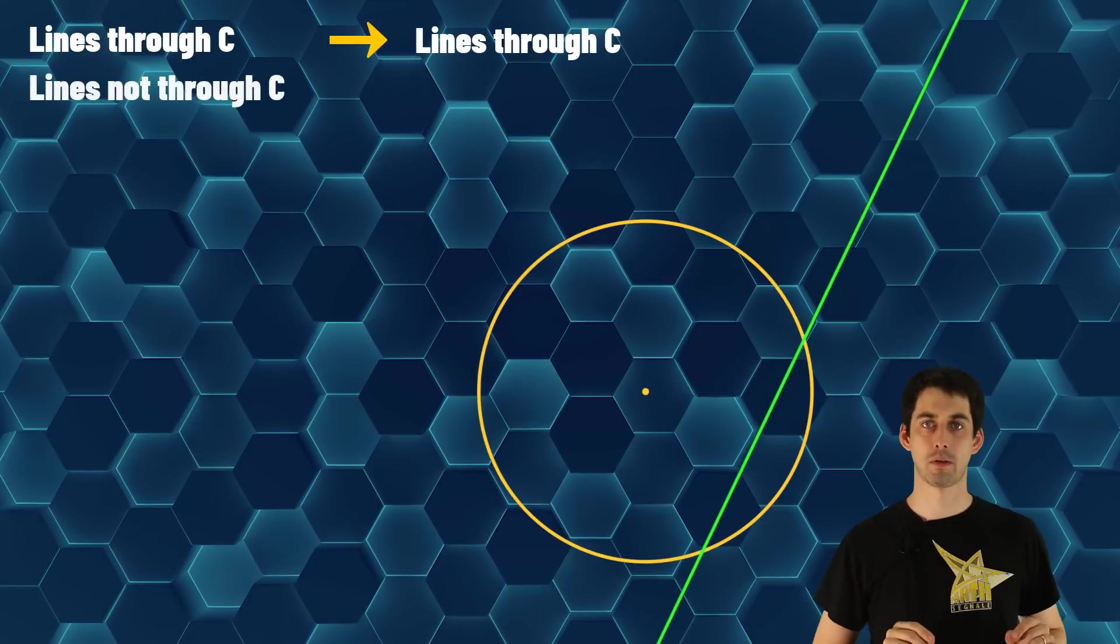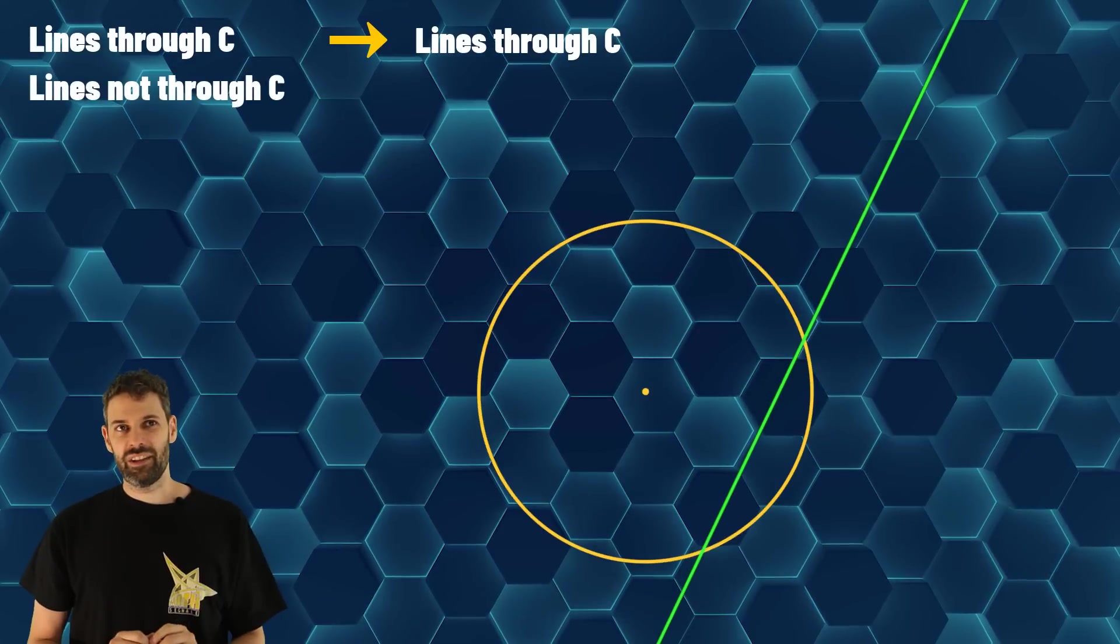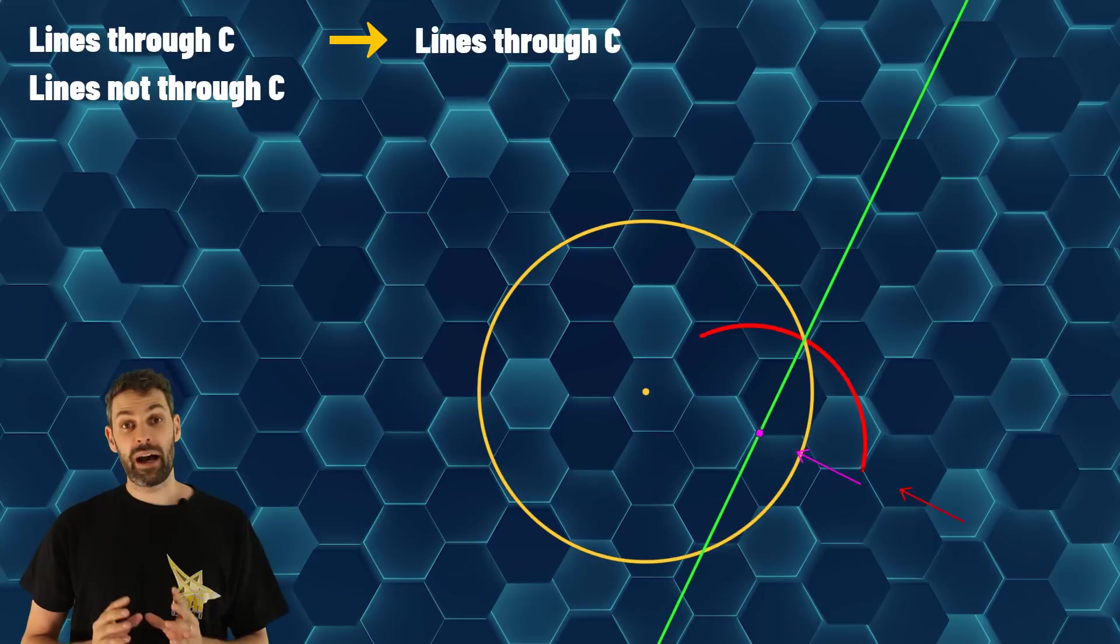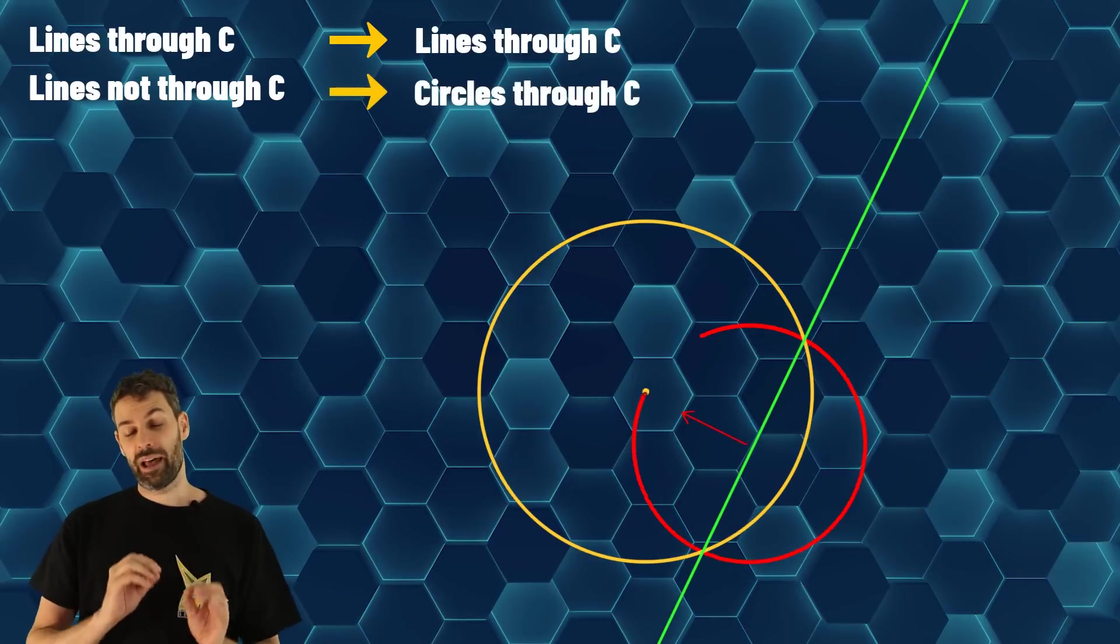What happens if the line does not pass through C? In this case, it is slightly more difficult to prove, but you will get a circle passing through C.